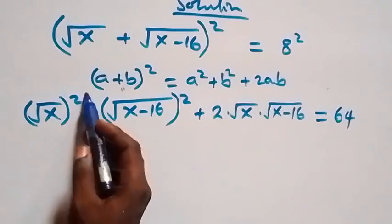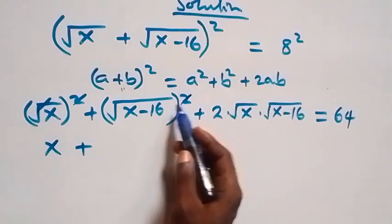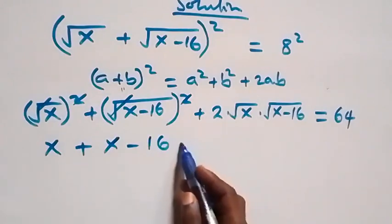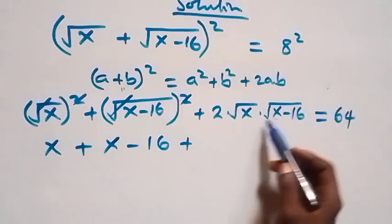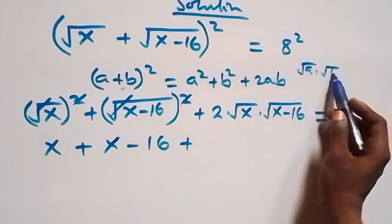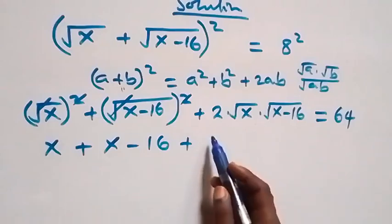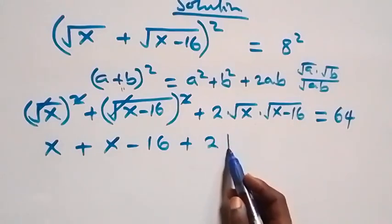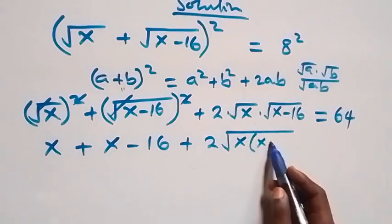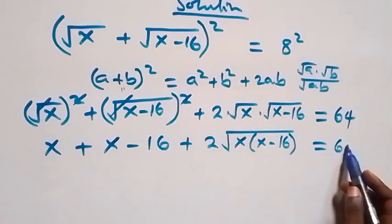The square and square root cancel, giving us x plus x minus 16. For the product of roots, √x · √(x-16) = √(x(x-16)). So we have x + (x-16) + 2·√(x(x-16)) equals 64.